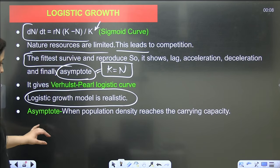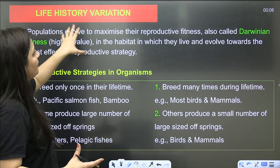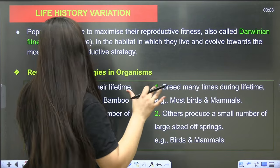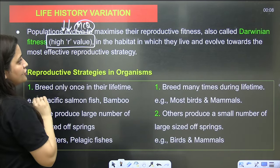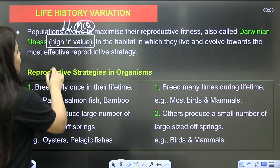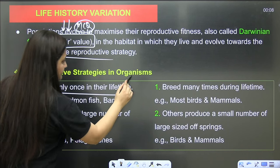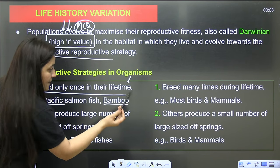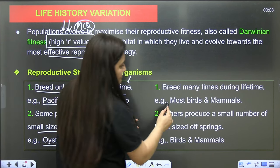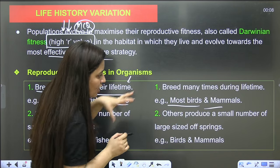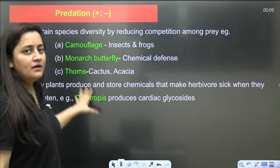In logistic growth, natural resources are limited, competition occurs, and the fittest survive and reproduce. The phases are: lag, log (acceleration), deceleration, and finally asymptote (K = N). This is the realistic model. Regarding life history variation, populations evolve to maximize reproductive fitness — high r value as per Darwinian fitness. Some organisms breed only once (Pacific salmon, bamboo); some produce large numbers of small offspring (oysters, fish); others breed many times producing few large offspring (birds and mammals).